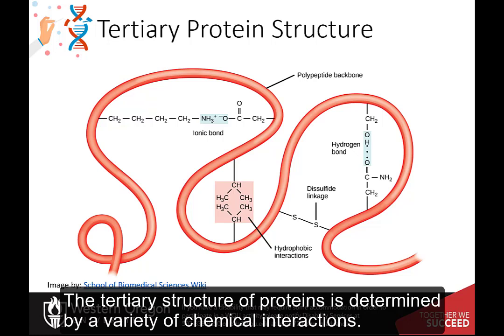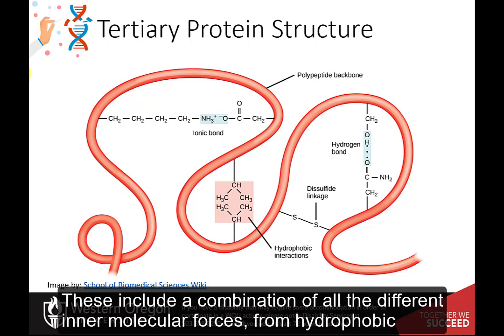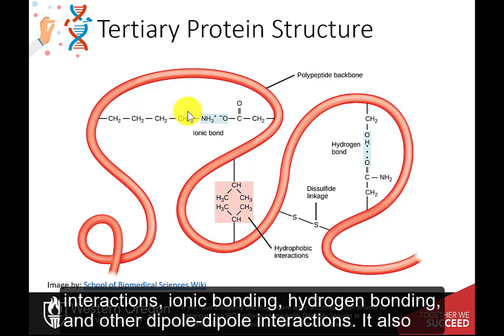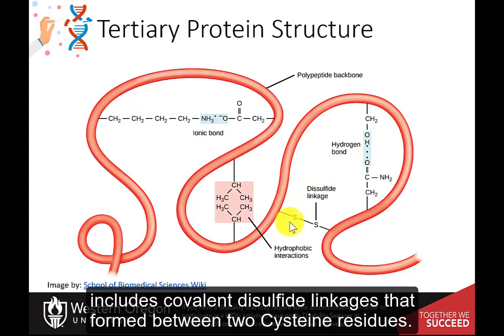The tertiary structure of proteins is determined by a variety of chemical interactions. These include a combination of all the different intermolecular forces, from hydrophobic interactions, ionic bonding, hydrogen bonding, and other dipole-dipole interactions. It also includes covalent disulfide linkages that form between two cysteine residues.